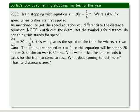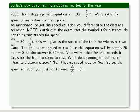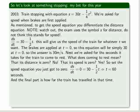Next we're asked for the seconds it takes for the train to come to rest. What does coming to rest mean? That its distance is zero? No. That its speed is zero? Yes. So set the speed equation you just got to zero. ds dt equals zero. So 30 minus 1 half t equals zero. And that implies that t equals 60 seconds.